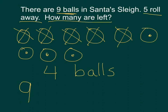Remember what happened? Five of them rolled away. If something rolls away, I don't have them anymore — they're gone. So I need to subtract. Minus five equals — do you remember how many I had left? One, two, three, four. Nine minus five equals four.